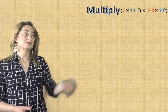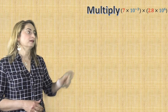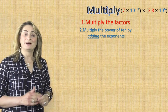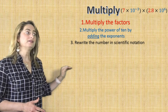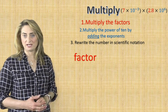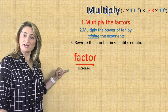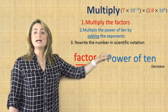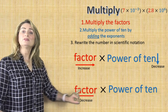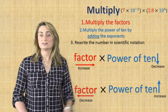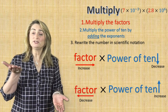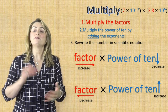Let's review the steps to multiply scientific notation. Multiply the factors first, then multiply the power of 10 by adding the exponents, then rewrite the number in scientific notation. The relationship between the factor and the power of 10 is inverse: if you are increasing the factor, then the power of 10 has to decrease. And if you are decreasing the factor, then the power of 10 has to increase. They have the opposite relationship.